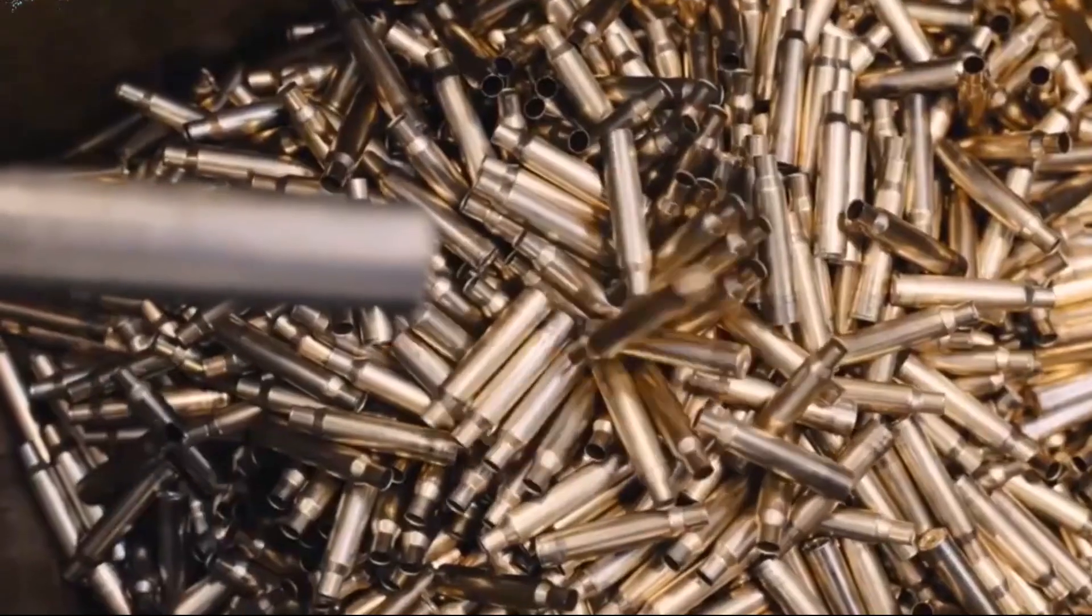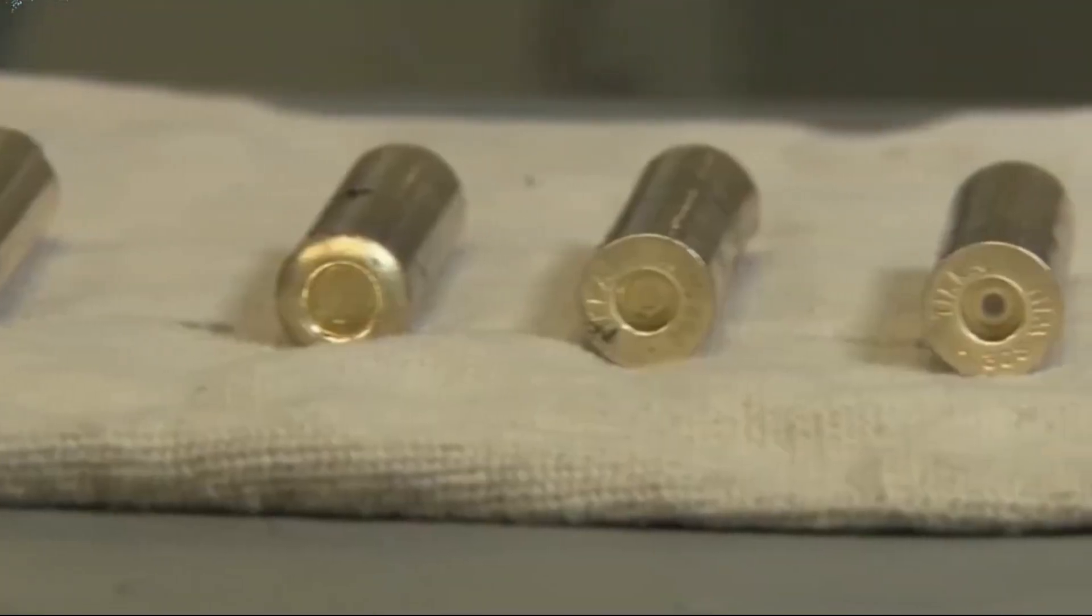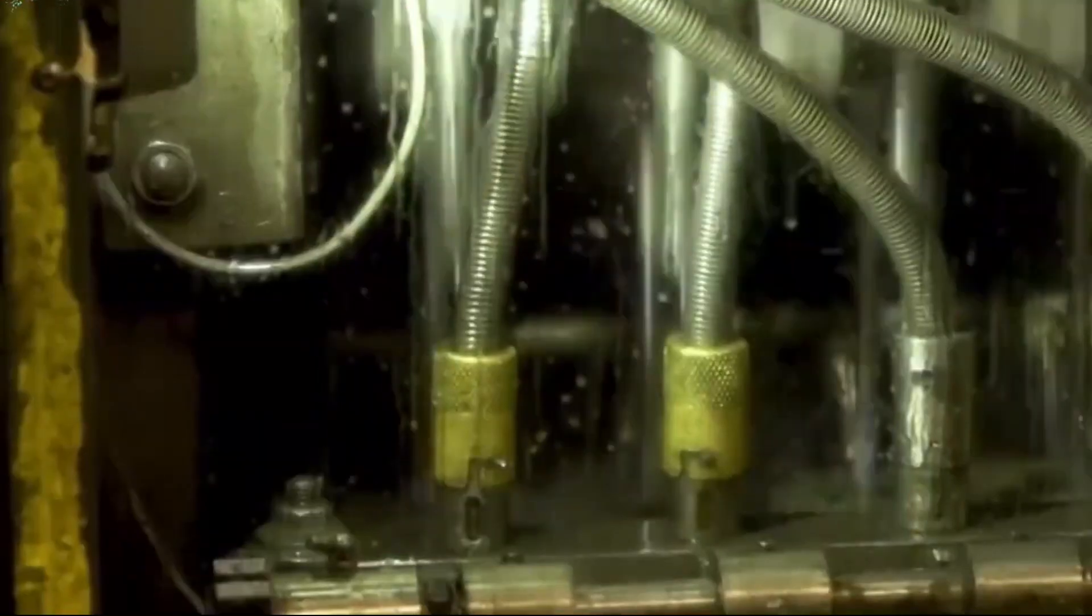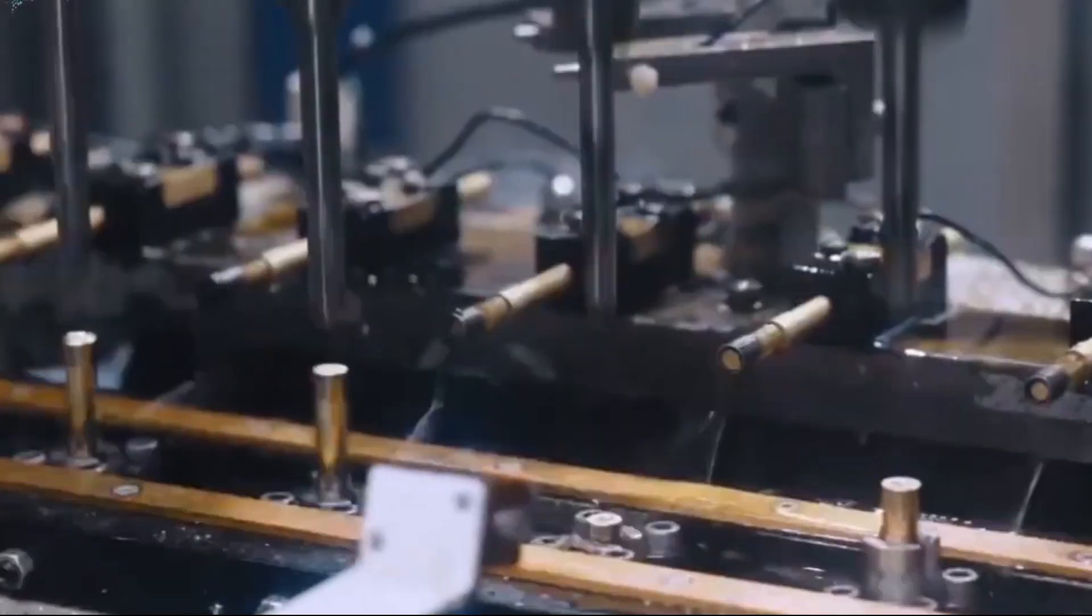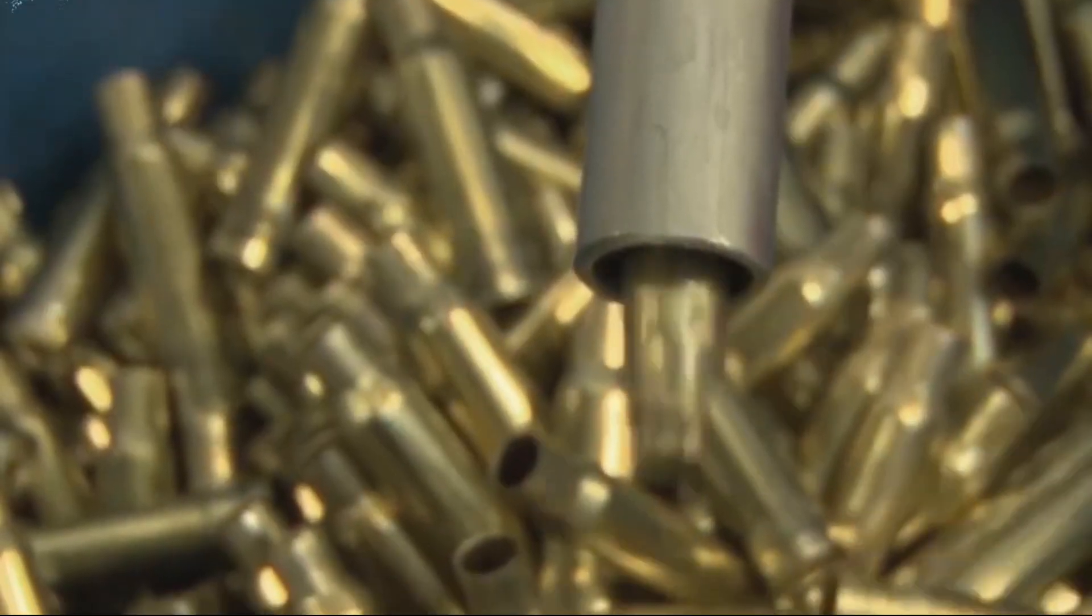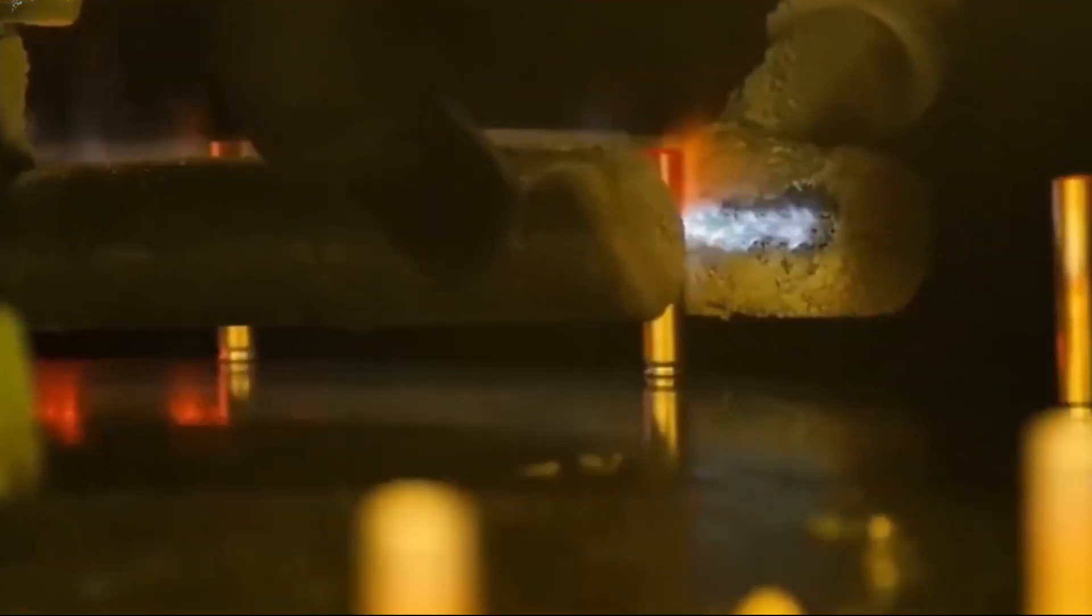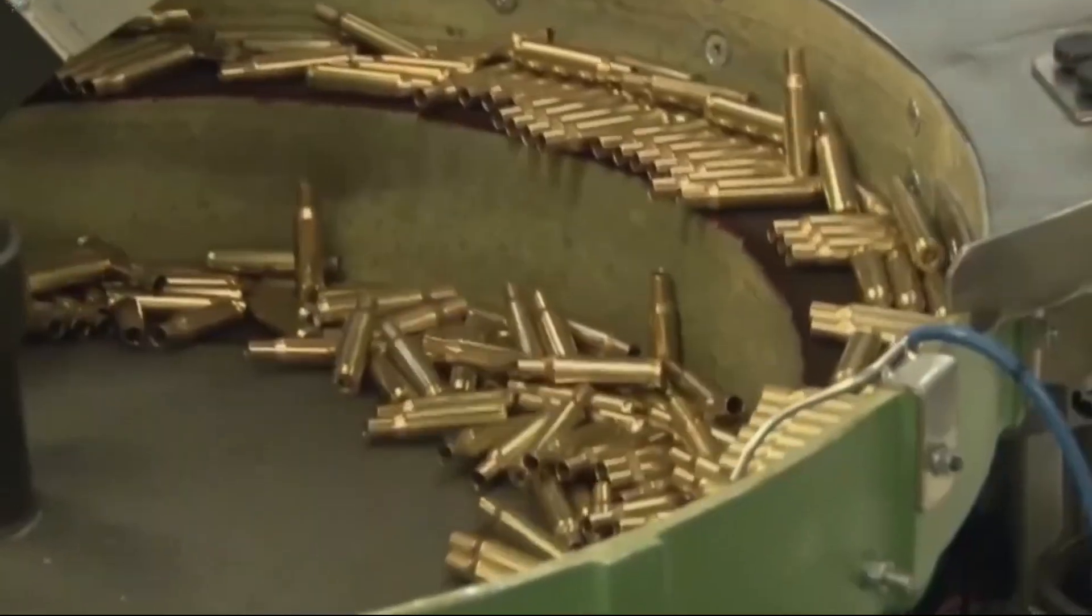These cups then undergo a series of drawing operations, where they're progressively stretched and elongated. Each drawing stage makes the case longer and thinner, transforming the initial cup into the familiar cartridge shape.